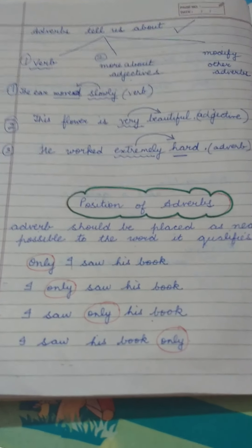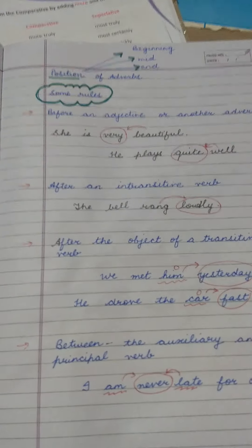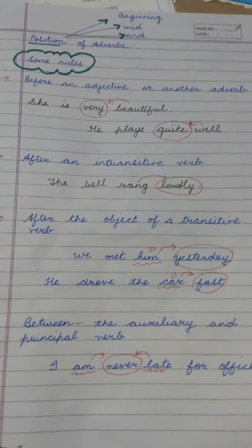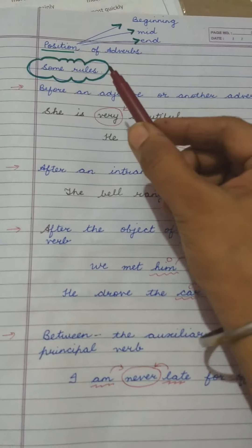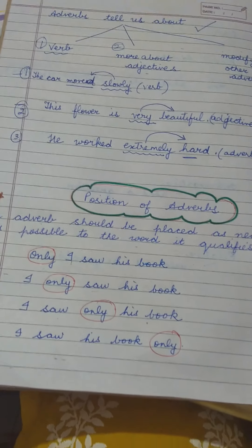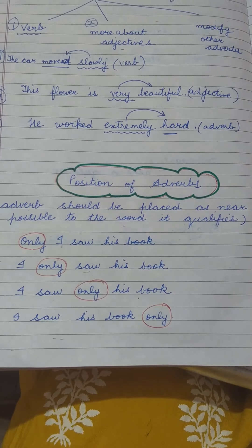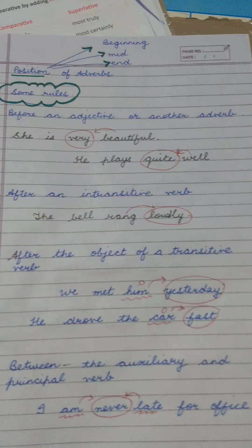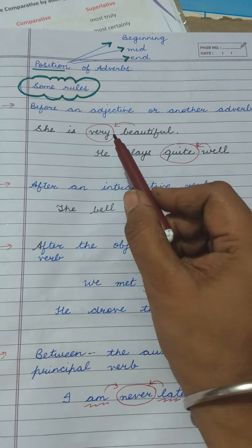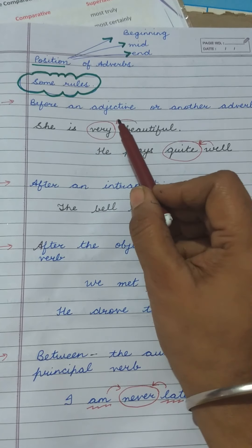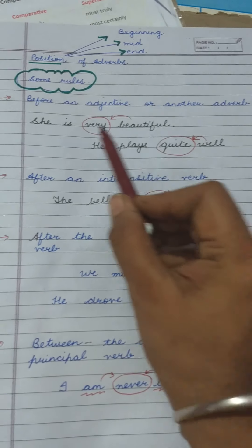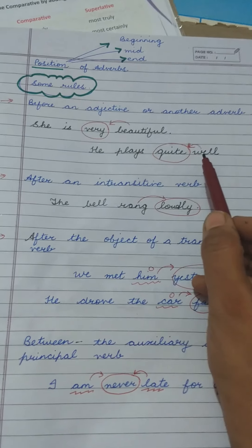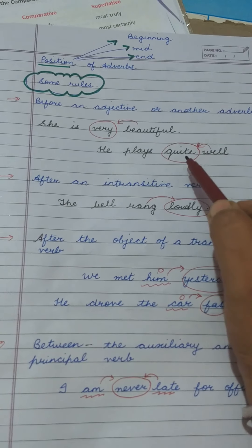Let's start learning the rules for writing adverbs correctly in a sentence. These basic rules are going to help you avoid the common mistakes people generally make. Please write these rules down — you can pause the video. The first rule: adverbs are placed before an adjective or another adverb. For example, 'She is very beautiful' — 'very' is the adverb placed before the adjective 'beautiful.' Also, 'quite well' — 'quite' is the adverb before the adverb 'well.'